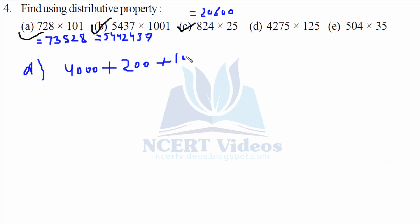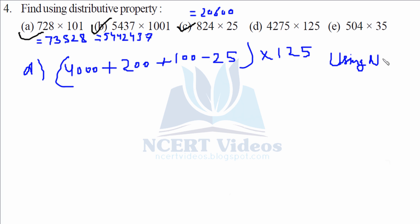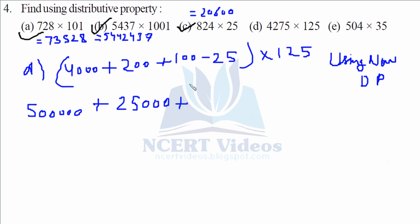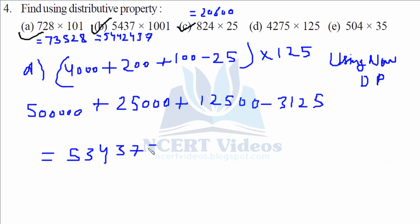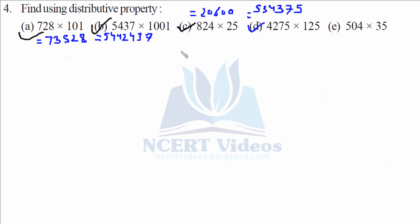Part D: 4275 into 125. We split 4275 as 4000 plus 200 plus 100 minus 25. Applying distributive property: 4000 into 125 is 500000, plus 200 into 125 is 25000, plus 100 into 125 is 12500, minus 25 into 125 is 3125. Adding and subtracting gives 534375 as the final answer.